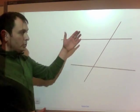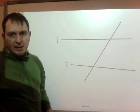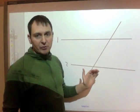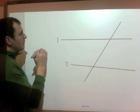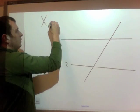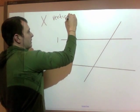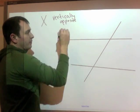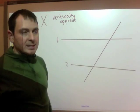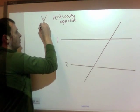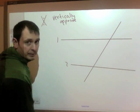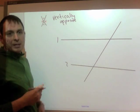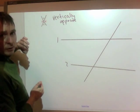Here are our two lines — line one and line two. Today we're dealing with non-parallel lines, so these aren't necessarily parallel; they're coming together. And we have a transversal. The next letter is X, which stands for vertically opposite. Vertically opposite just means opposite sides of the X. So these two are vertically opposite, and these two here are also vertically opposite to each other.